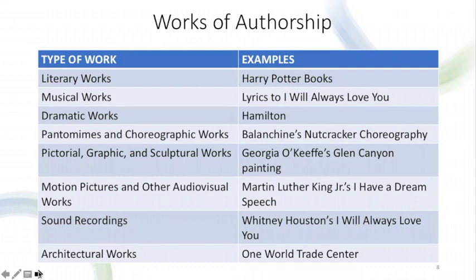Dramatic works include plays, musicals, and other theater-type productions — think of the Broadway musical Hamilton. Pantomimes and choreographic works in modern times primarily consist of recorded choreography but still include pantomimes, which are speechless performances using physical gestures. The choreography in The Nutcracker would qualify as a choreographic work.